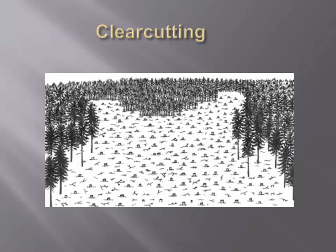In a clear cut, you're going to harvest all of the merchantable trees. Whatever the log buyer won't take, you're going to intentionally kill and fell to the ground — any tree that's two inches in diameter and larger. A clear cut should be two acres in size or larger. Anything smaller and you'll get an edge shading effect — there's going to be so much shading going on that you won't stimulate that oak regeneration.